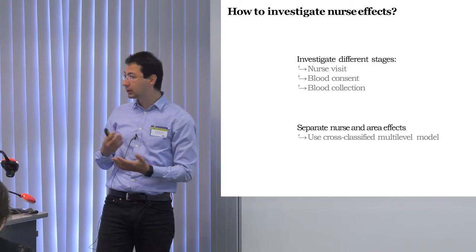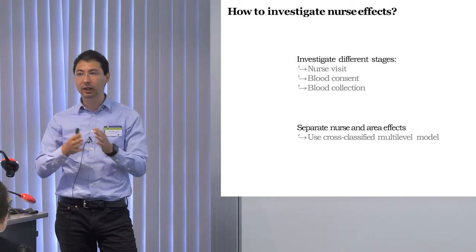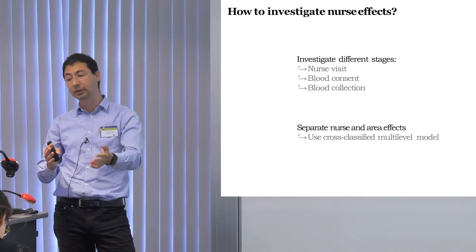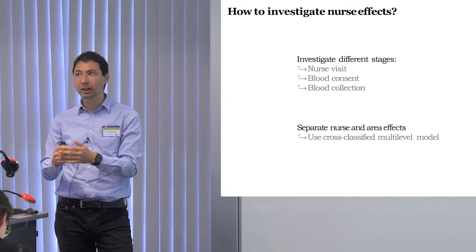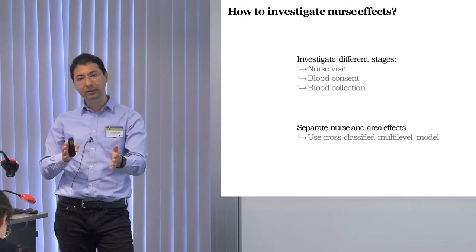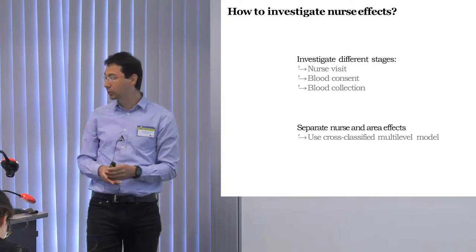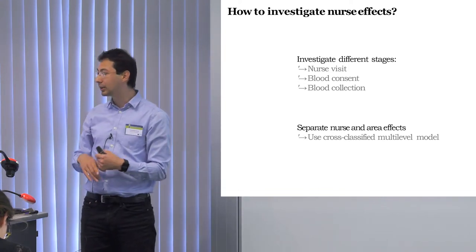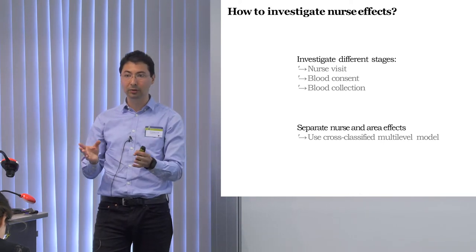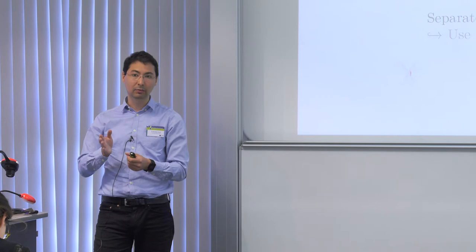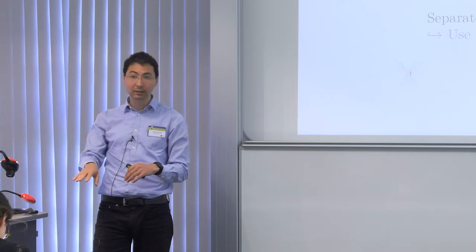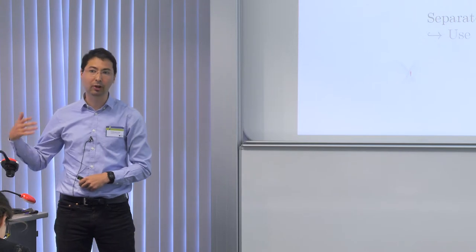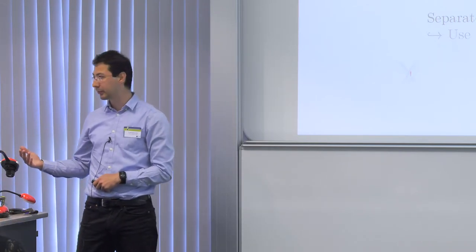Statistically, we need to do a couple of things. Nurses are not randomly distributed around the country — for example, maybe better nurses are around London and nurses in different regions are less good. To avoid that bias, we need to separate area effects and nurse effects. One ideal approach would be to randomize nurses all over the country, but that's very expensive and will never happen. So we use a cross-classified multilevel model in which we estimate effects for areas — which are LSOAs — and then for nurses, while also controlling for characteristics of respondents and some characteristics of the nurses.